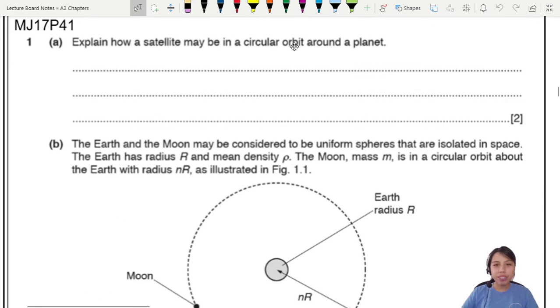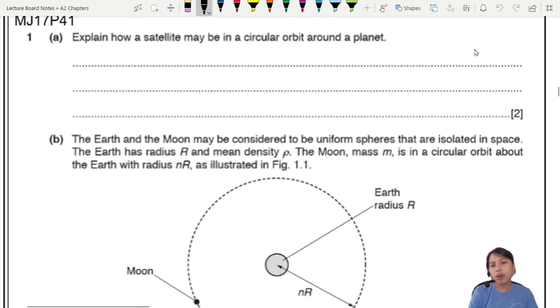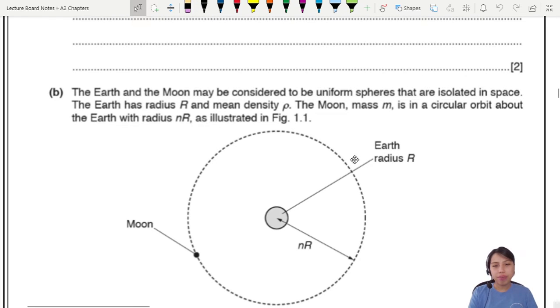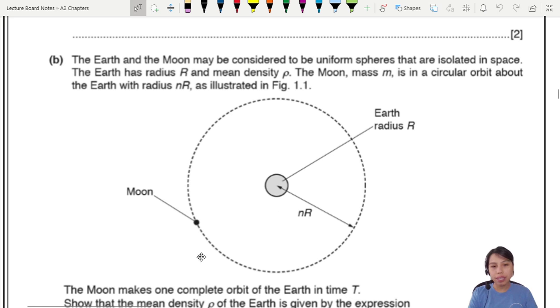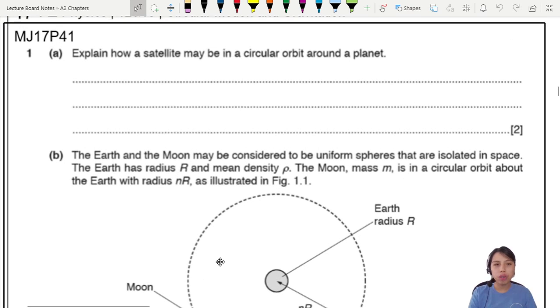Explain how a satellite may be in a circular orbit around a planet. A circular orbit really means this picture like this. Got a big fat planet here, got a tiny little satellite, where it can be a small moon, a chunk of rock, could be anything.